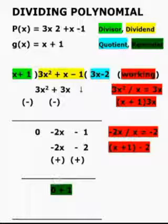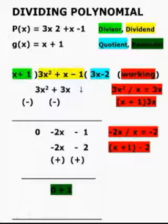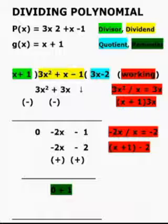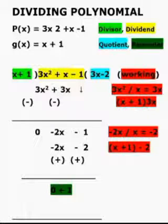Minus 2x will become plus 2x and minus 2 will become plus 2. Here plus 2x and minus 2x will cancel, giving 0. And minus 1 plus 2 gives 1, which is the remainder. We stop here as the remainder is 1, and the division process is said to be complete.